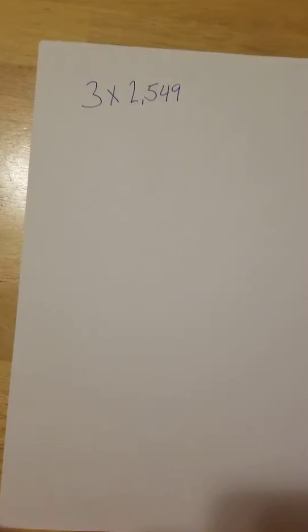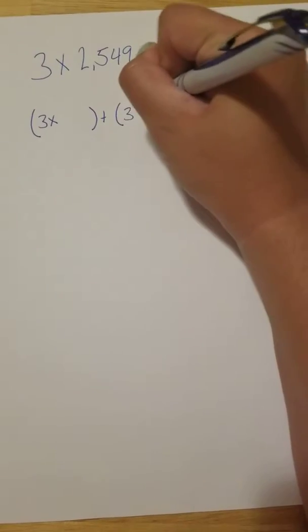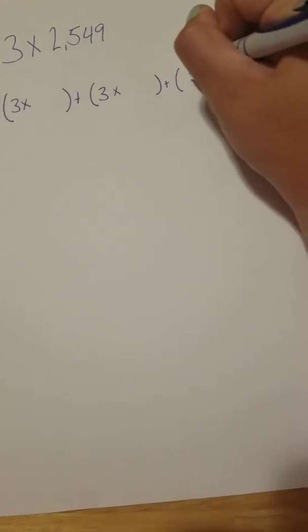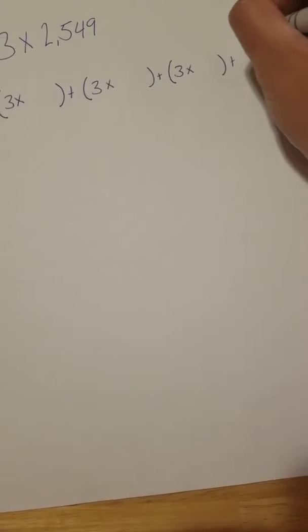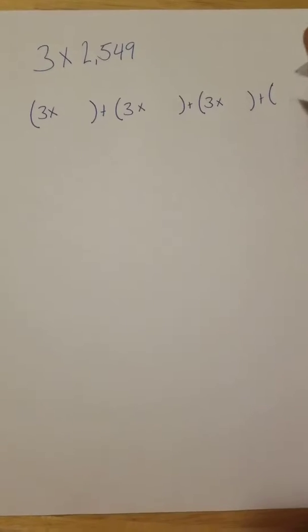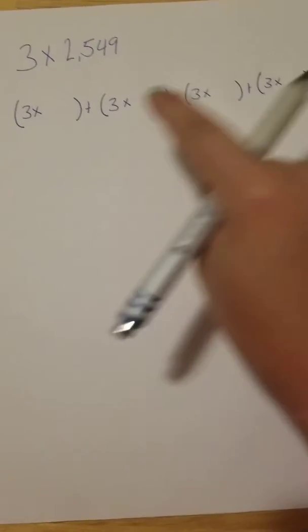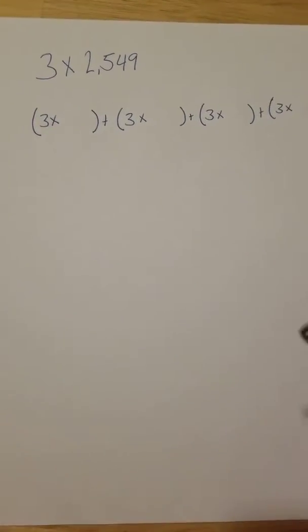When using the distributive property, we are going to use parentheses. I'm going to keep the 3 the same in every set of parentheses. So parentheses 3 times blank, parentheses 3 times blank, parentheses 3 times blank. And one more because I'm going to use the place values from 2,549. So I have four sets of parentheses set up for the four digits in that second number.